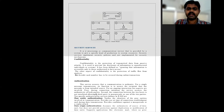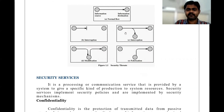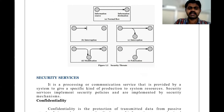Looking at the diagram: in a normal flow, information goes from source to destination without interruption. In an interruption attack, the flow is stopped. In interception, the data is accessed but not forwarded — the recipient doesn't receive the information. In modification, the data is modified and then sent to the recipient. In fabrication, the information is fabricated and sent to the recipient.